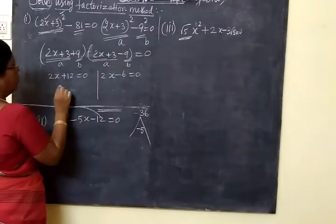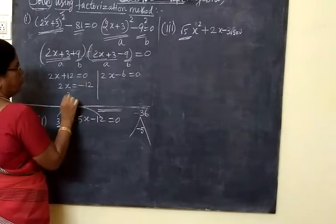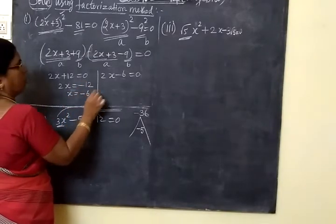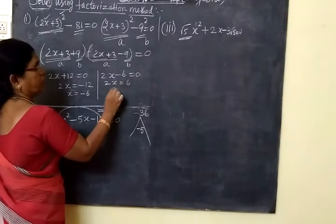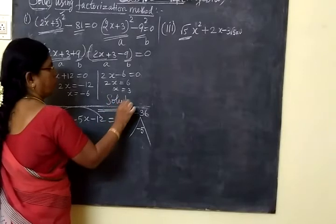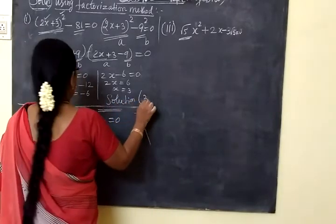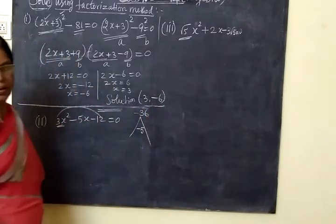So 2x plus 3 is equal to 0 or 2x minus 6 equal to 0. 2x equal to minus 12 and the other one plus 12. So x equal to minus 6 and the other one plus 6. So x equal to 3. Therefore, solution is 3, minus 6. So this is the answer for the first one.